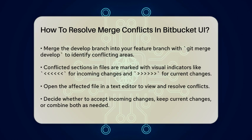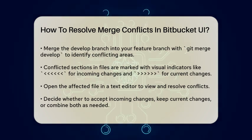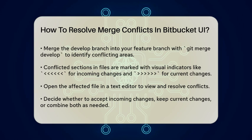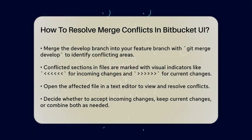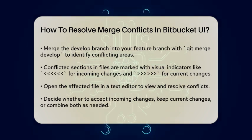Now, merge the develop branch into your feature branch using git merge develop. This will highlight the conflicted areas. When you run into a conflict, Git will mark the conflicting sections in the files using visual indicators. You'll see the incoming changes and the current changes separated by conflict marker lines.